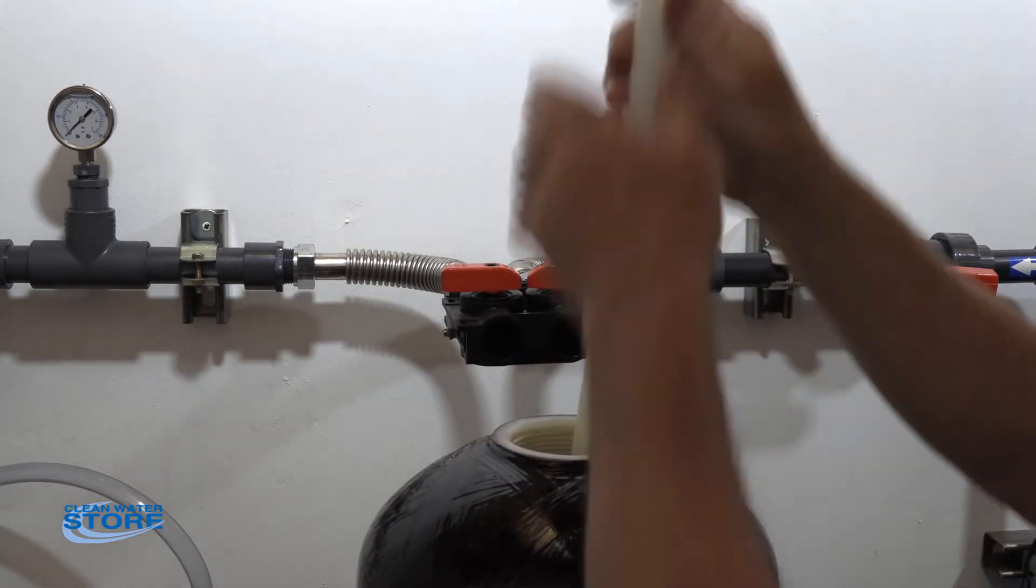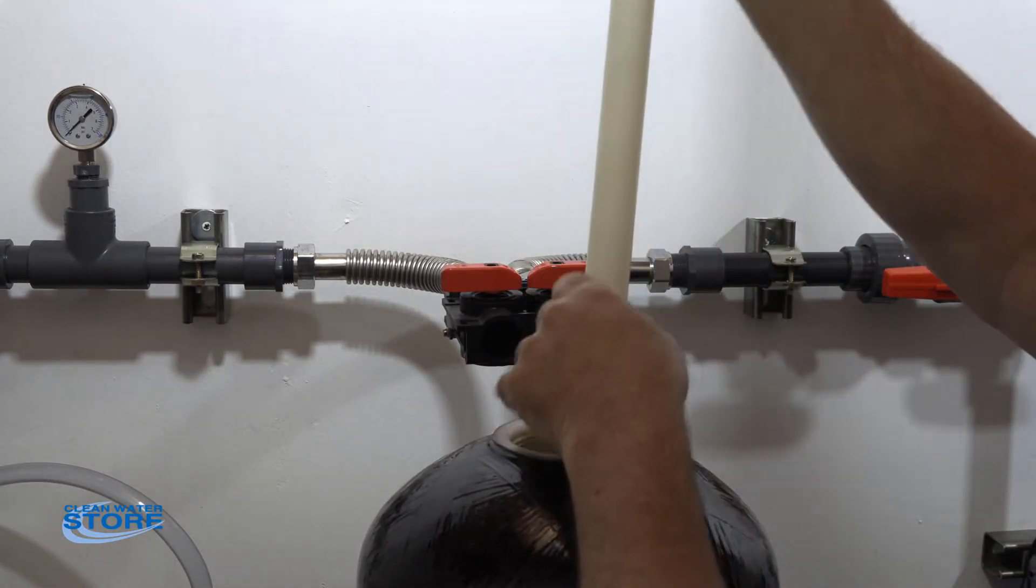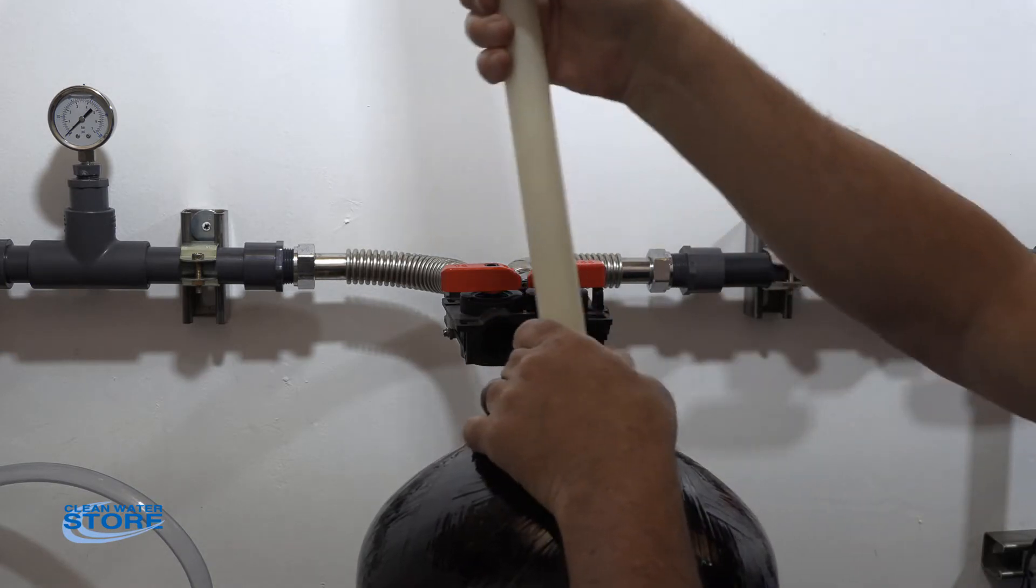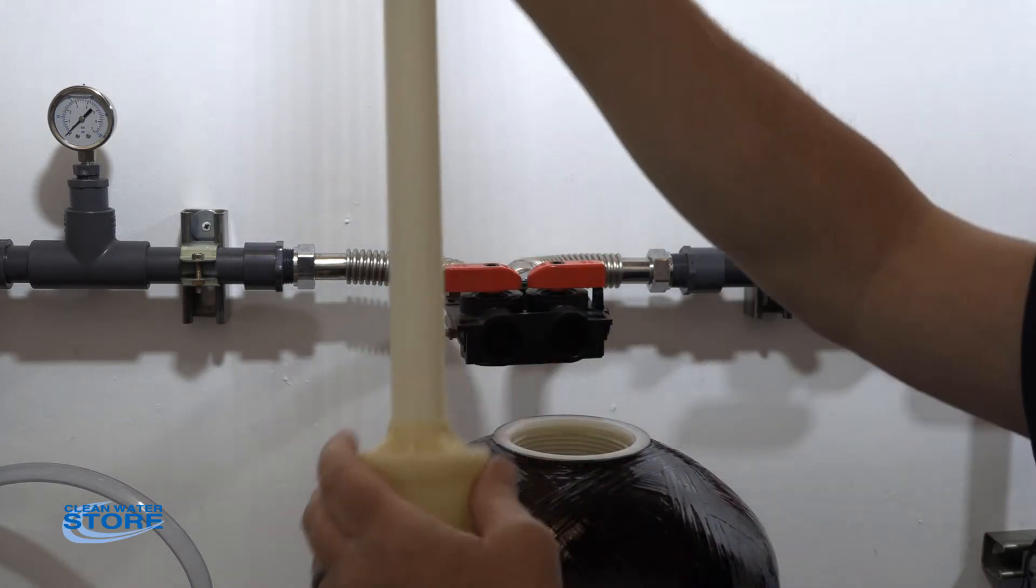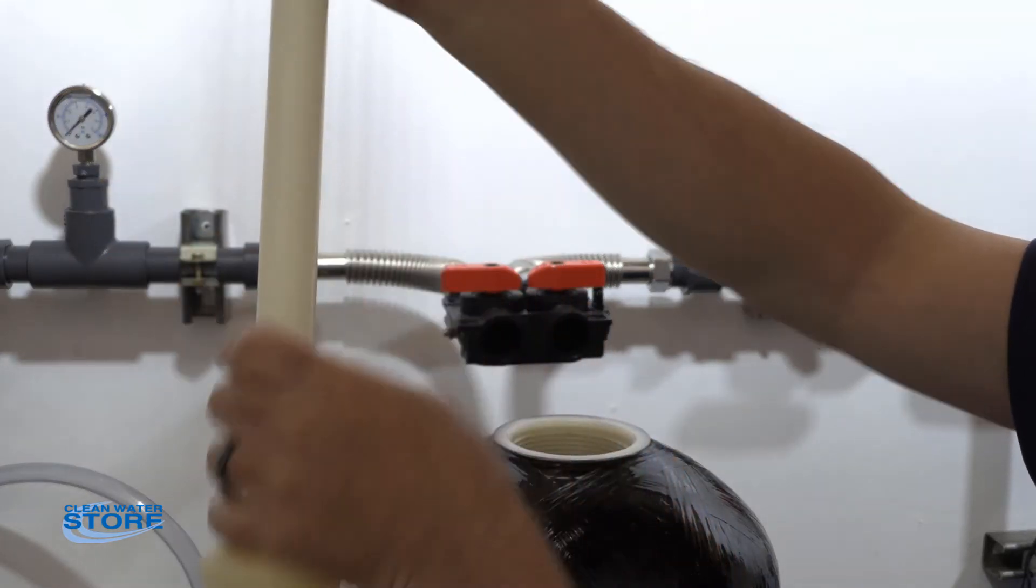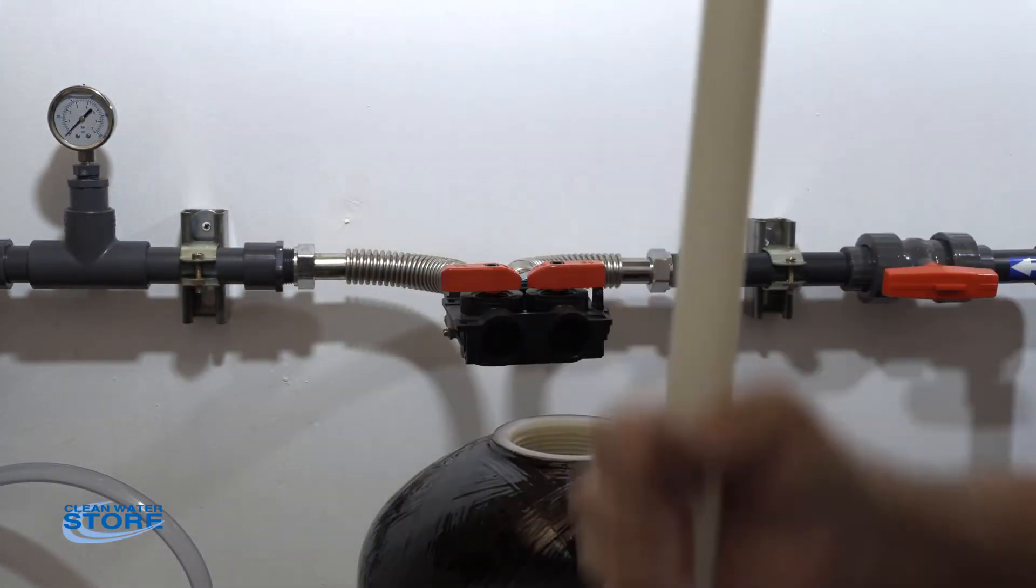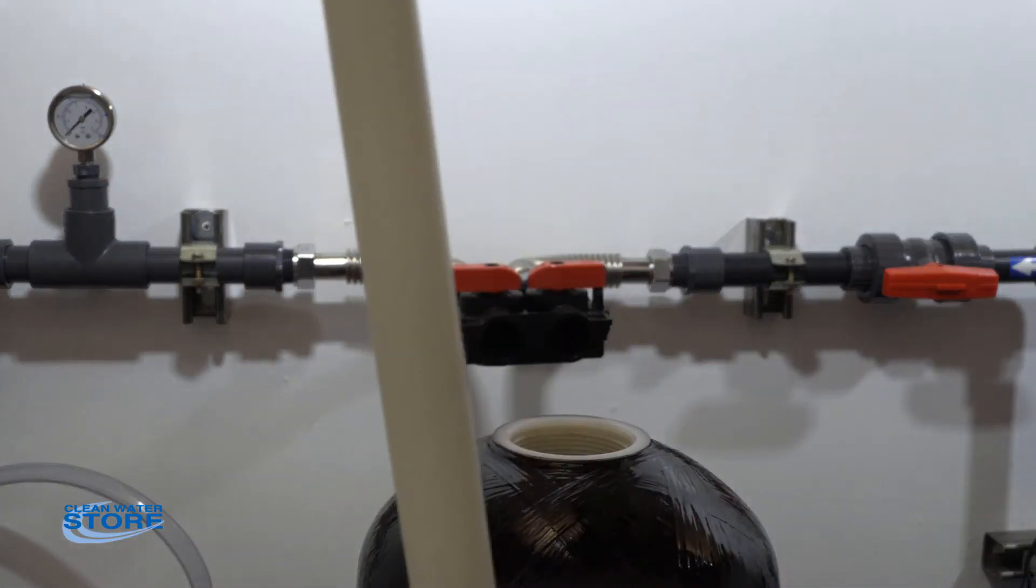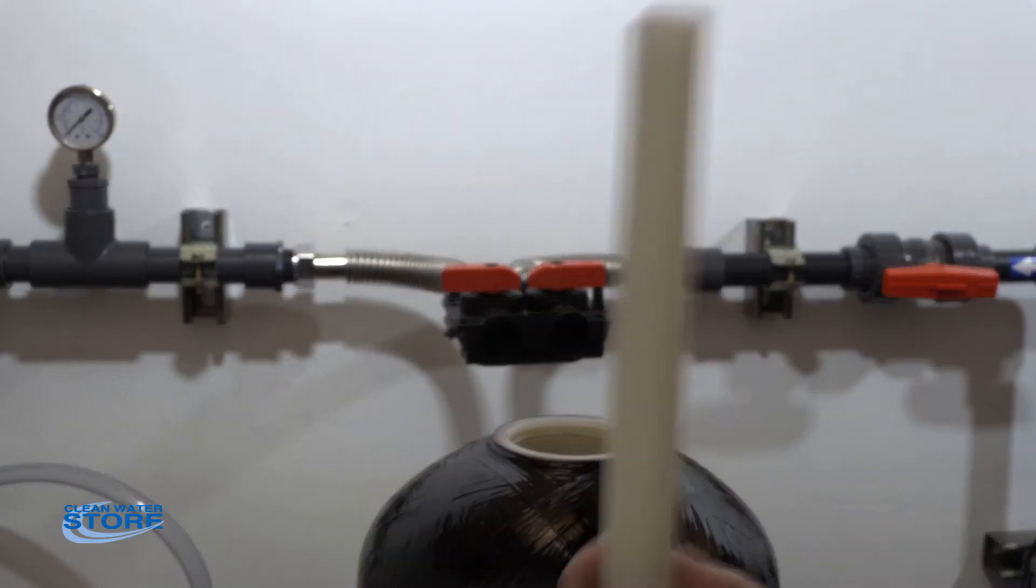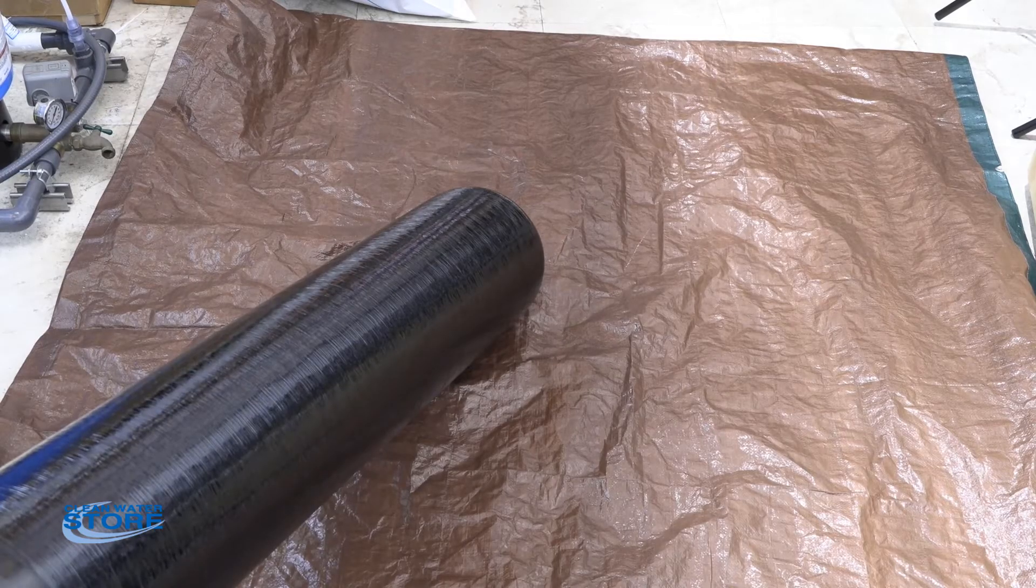You can also take this opportunity if you can to go ahead and remove the D-tube. Sometimes these are harder to do if there's a lot of media in there, a larger tank, because remember your gravel does come up to here and then you have your media in here. So if you can pull the tube out, great. If not, you can wait till you dump it out to actually remove your D-tube.